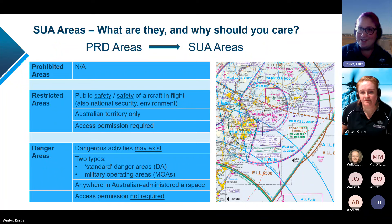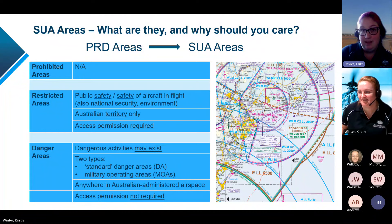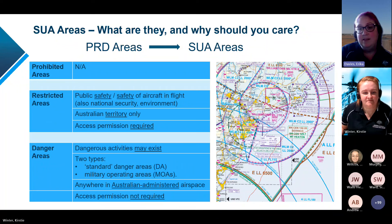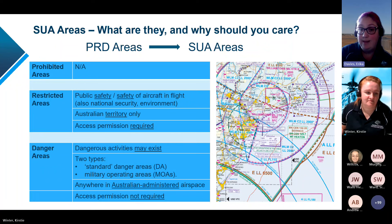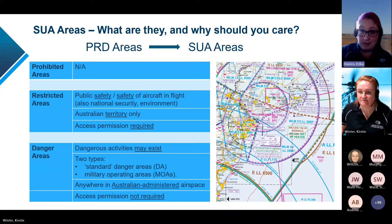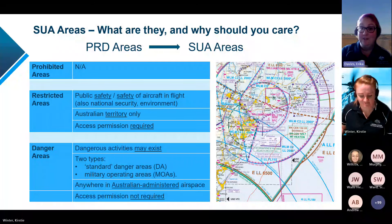Danger areas can be declared anywhere in Australian administered airspace - that means anywhere in either the Brisbane or the Melbourne FIR - and access permission for these is not required; they are more advisory. There's a distinction between Australian territory and Australian administered airspace. There's a 12 nautical mile limit off the coast shown on the Newcastle VNC - that line is the limit of Australian territorial airspace. Anything past the line is administered by us on behalf of ICAO but isn't part of our territory. Inside the line, we can declare restricted areas; outside the line, the OAR is only able to declare danger areas, including MOAs. I'll hand over to Max to talk more about military uses of airspace.